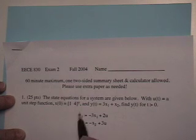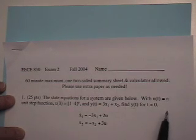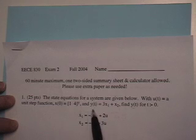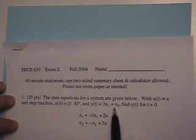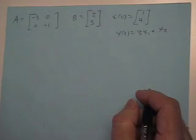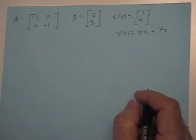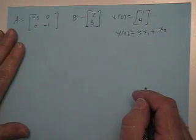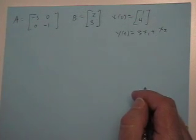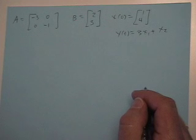We're going to find the solution for the states first, and then use that to find our solution for y of t. I've rewritten the basic information here: our A matrix, B matrix, initial conditions, and our input, which is of course a unit step function.